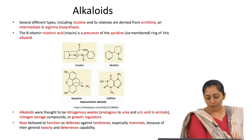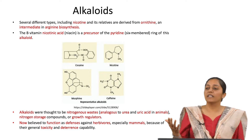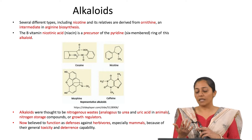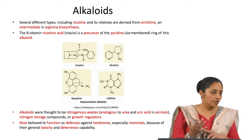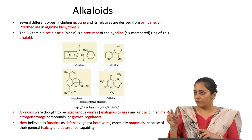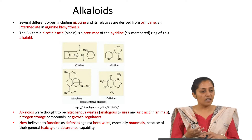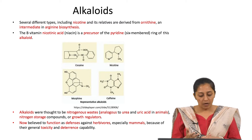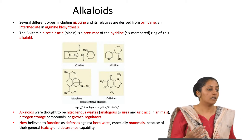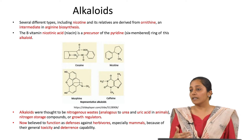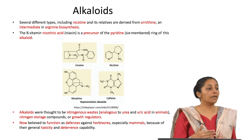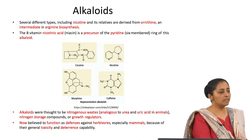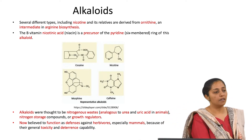Initially, alkaloids were thought to be nitrogen storage compounds or to act like urea or uric acid in mammals, or perhaps as growth regulators. Later it was found that they perform the higher function of defense in plants, either through toxicity or by feeding deterrence.